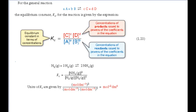You will meet three main types of equilibrium constant in this book. They're all related but differ in the way the constant is defined and are used in different circumstances. You will probably have already met the equilibrium constant Kc in your previous course at school or college. Kc is defined in terms of the concentrations of the reactants and products when the reaction has come to equilibrium.